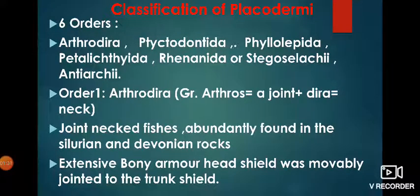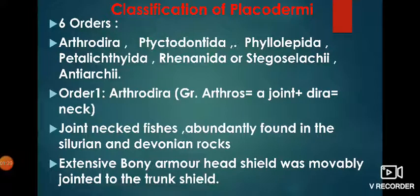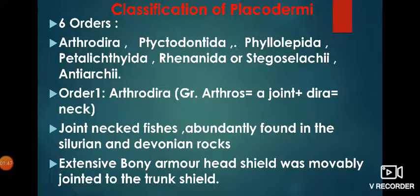We discussed the characteristics or salient features of Placoderms, which are the most important part. They were regarded as the first true fishes. These were plate-skinned fishes, and they also had bony armor like ostracoderms. They were bottom dwellers and close to the cartilaginous fishes.